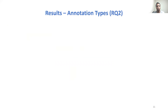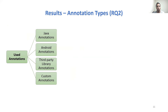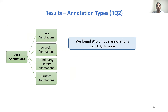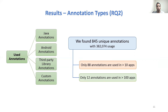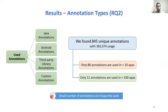Next, we investigated different types of annotations used in the studied apps. We categorized used annotations into four categories: Java annotations, Android annotations, third-party library annotations, and custom annotations. We found 845 unique annotations with around 400,000 annotation uses. Among these 845 unique annotations, only 88 are used in more than 10 apps, and only 12 are used in more than 100 apps — so a very small number of annotations are frequently used.